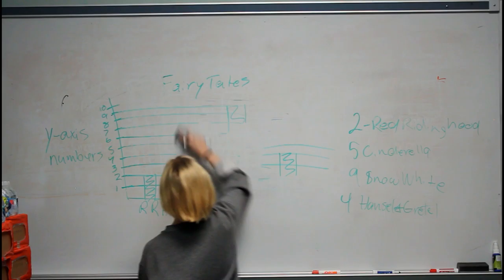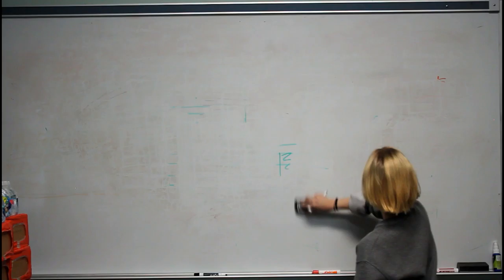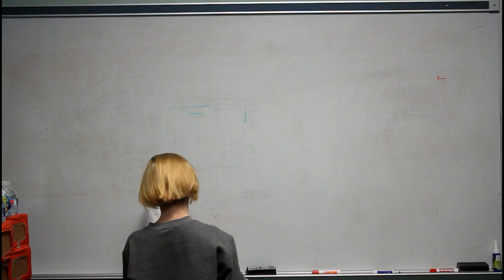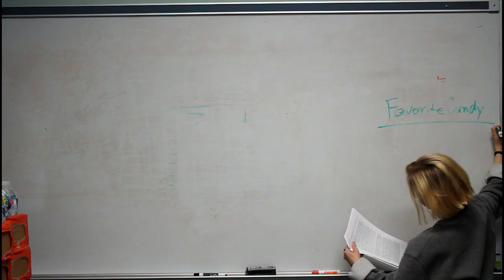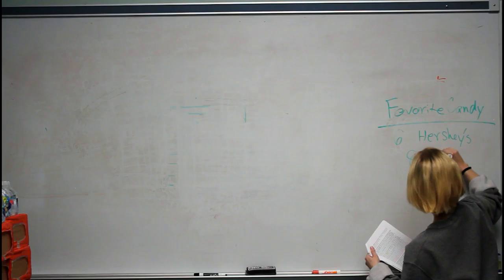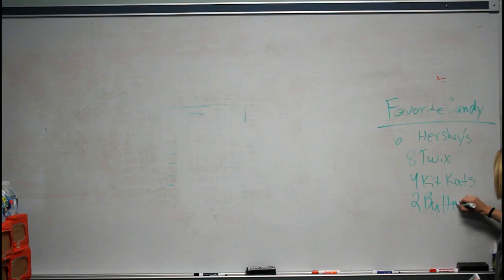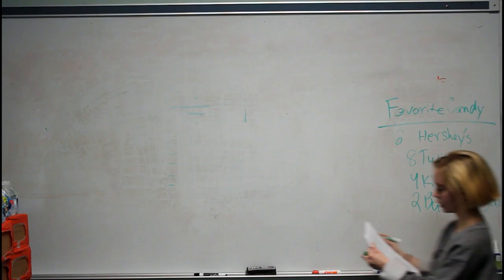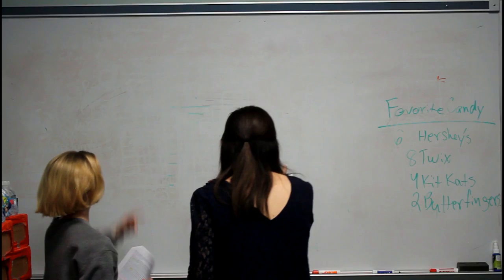Now comes the point where you guys are going to come up and help me draw. The first one we're going to do together — we're going to have 6 Hershey's, 8 Twix, 4 Kit Kats, and 2 Butterfingers. So let's go ahead and have Becky. What's the first step to making our graph?